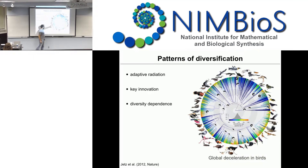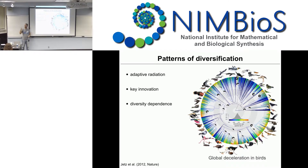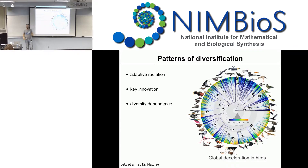Another large topic that we don't cover as much in RevBayes is diversity-dependent diversification. That basically means once you have an adaptive radiation, you diversify a lot until the niche capacity is filled, and then you have a higher extinction rate or lower speciation rate, so the net diversification rate goes towards zero and the number of species in that group stabilizes. We use diversification rates through time as a proxy for this.